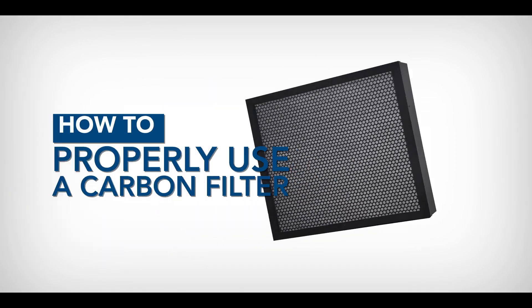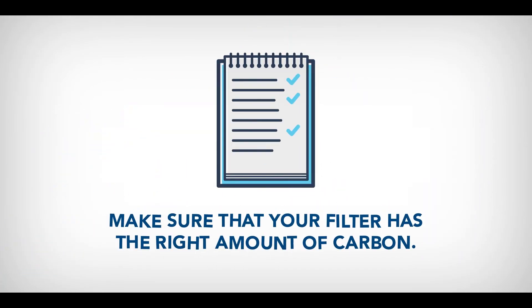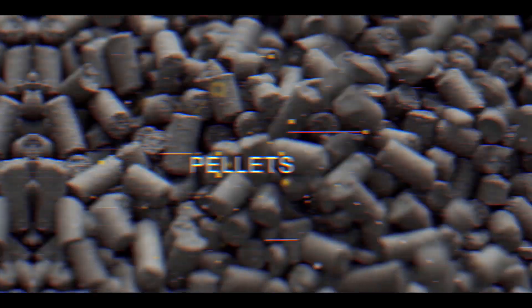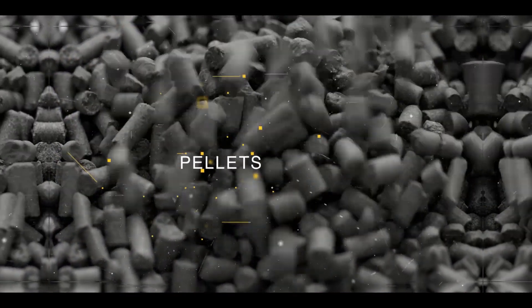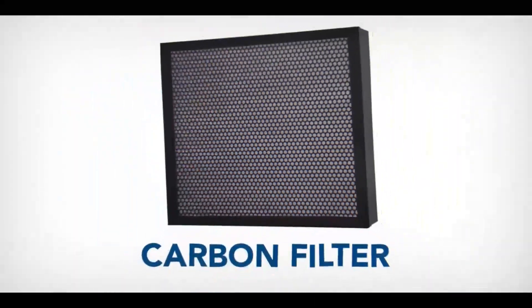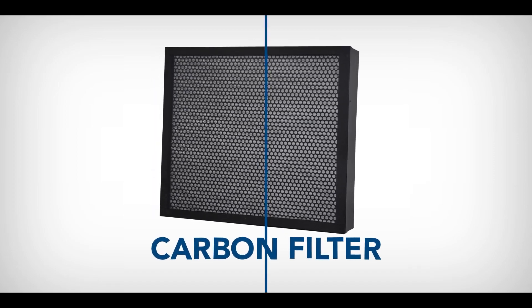How to properly use a carbon filter? Make sure that your filter has the right amount of carbon. Esco's nano-carb activated carbon filters are constructed to ensure maximum filter efficiency, retention capacity, and operator protection. Each filter is compacted with the right weight of carbon granules to ensure long filter life.